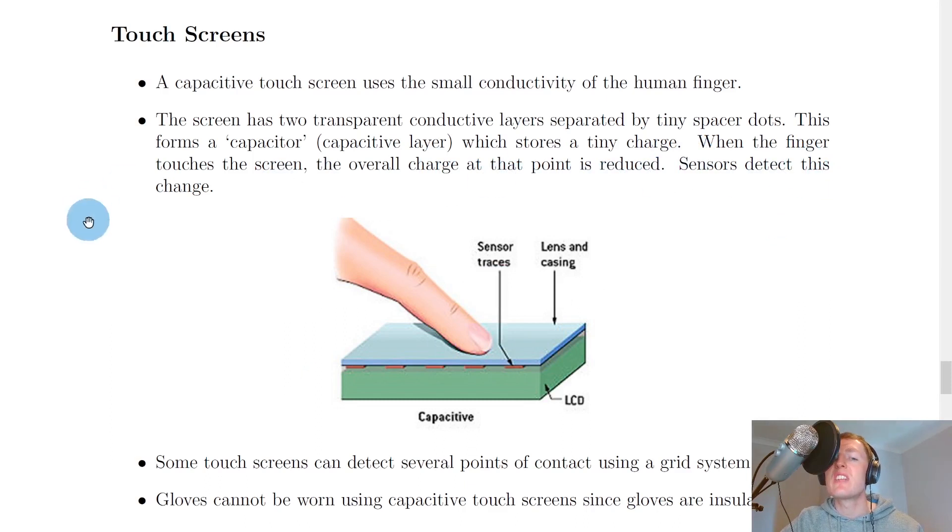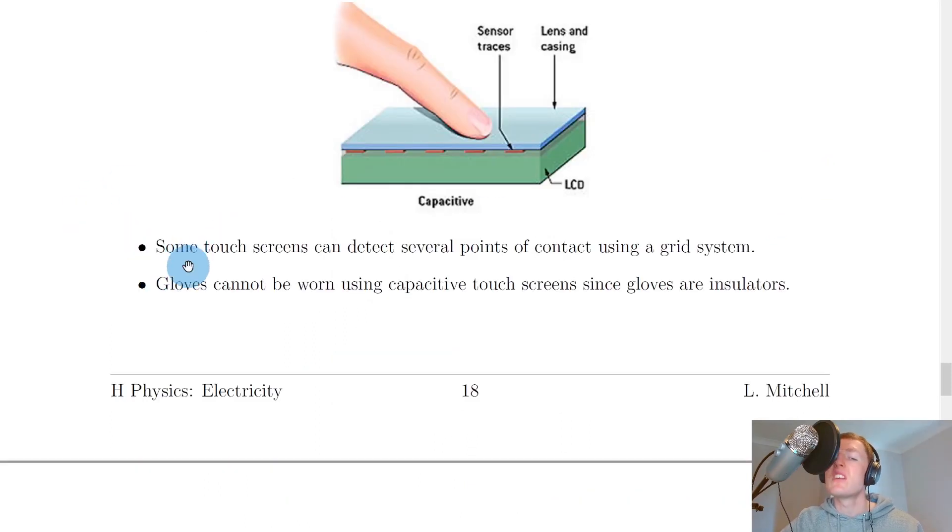It's worth noting that some touchscreens can detect several points of contact using a grid system. Gloves cannot be worn when using capacitive touchscreens since gloves are insulators. The skin on your finger is a conductor, which is how you can use mobile phones and tablets with touchscreens. But if you block your skin with gloves, you won't be able to use the touchscreen device due to the gloves being insulators.